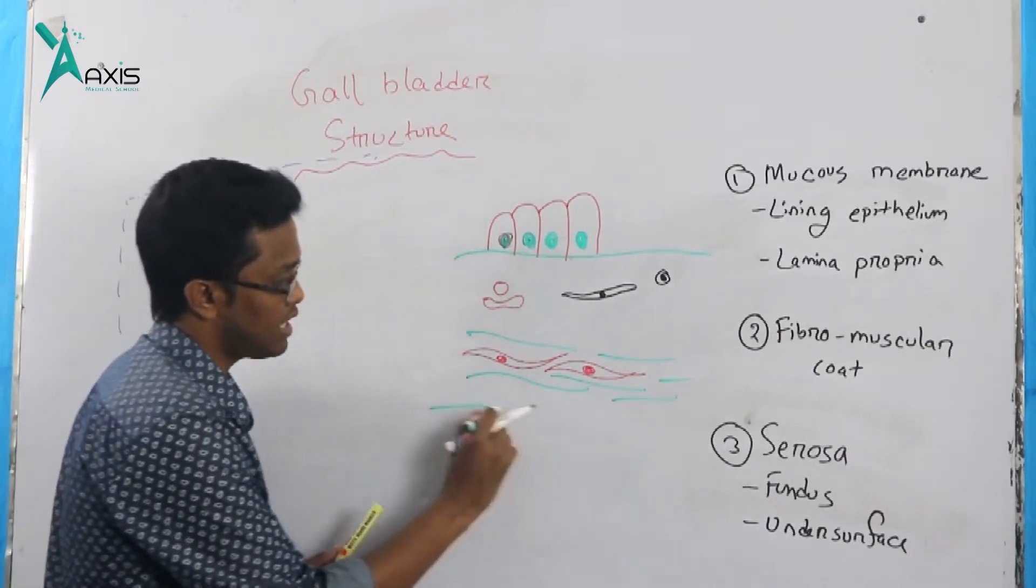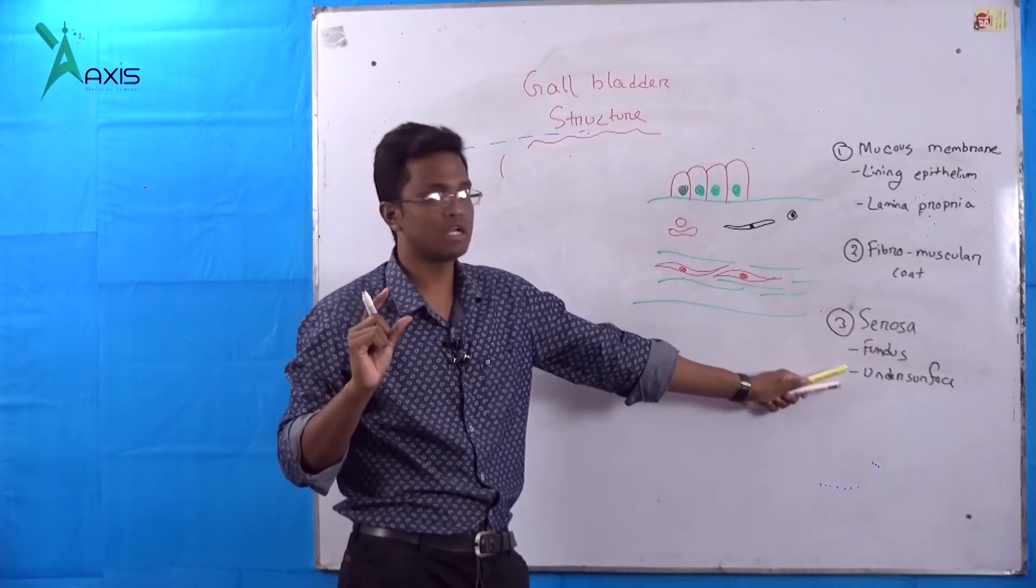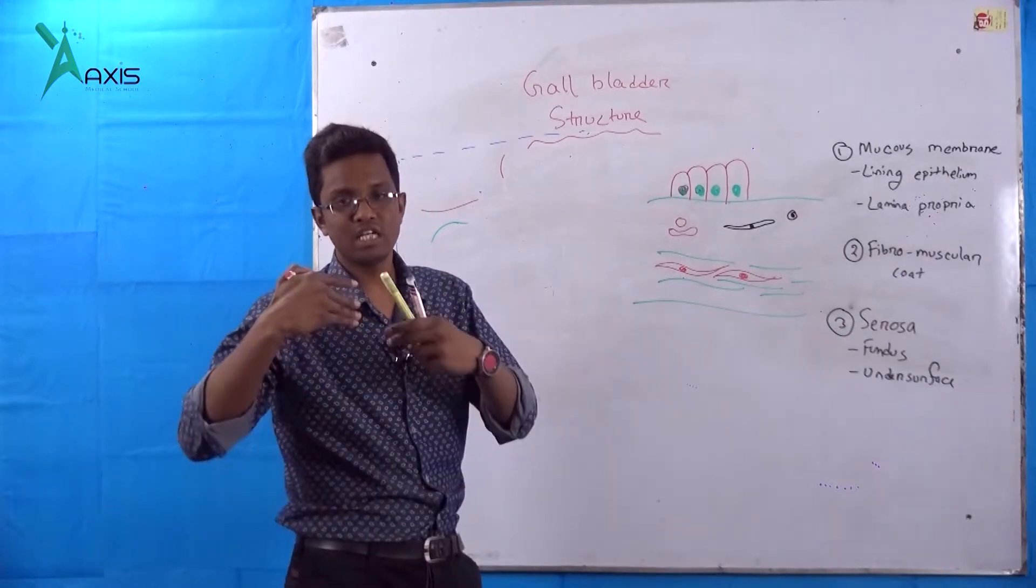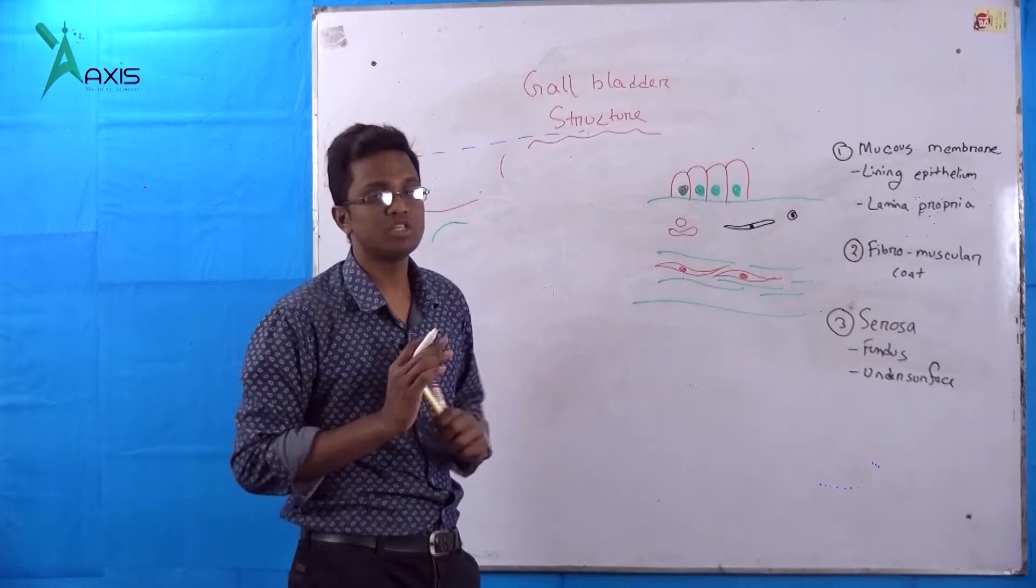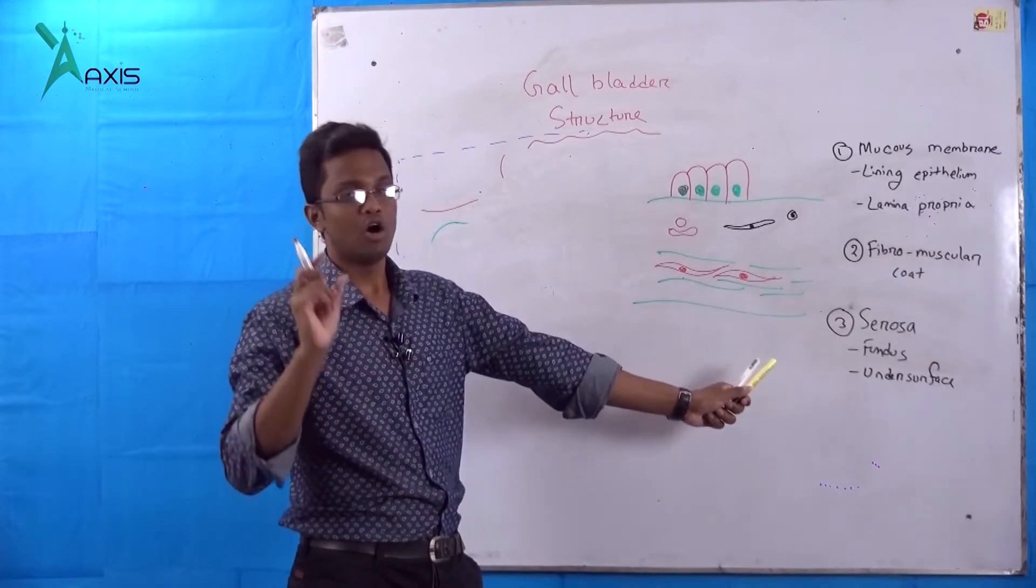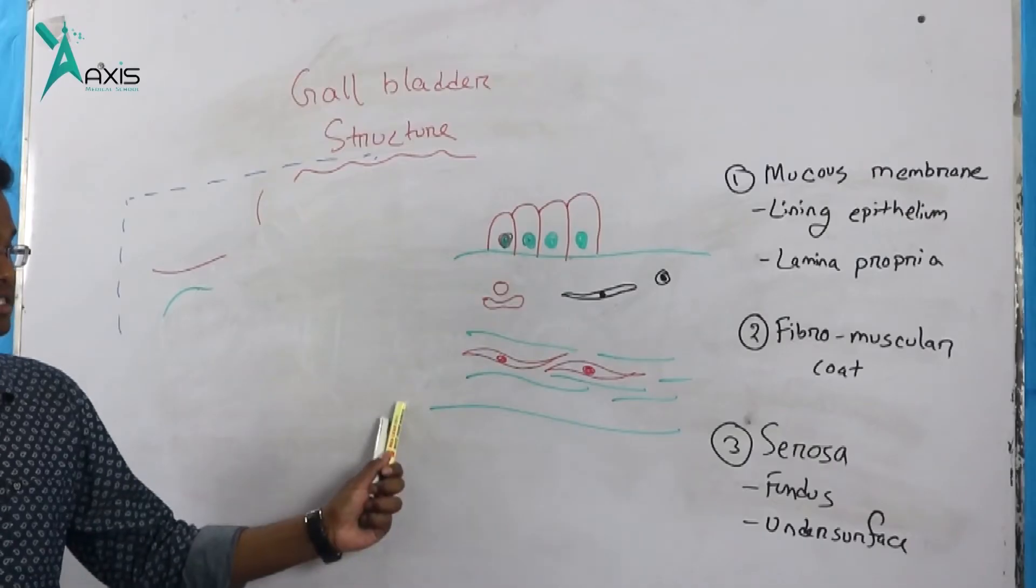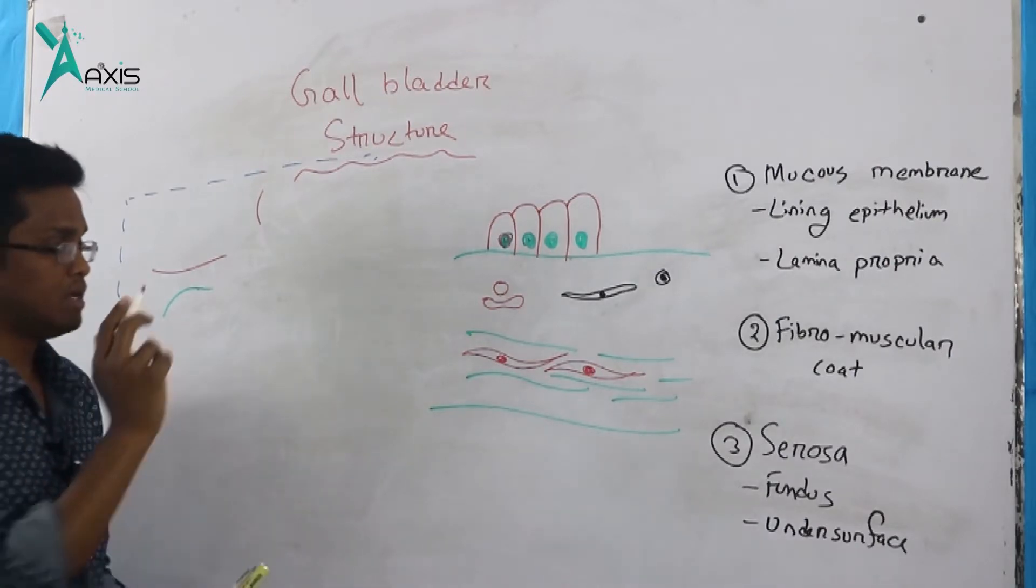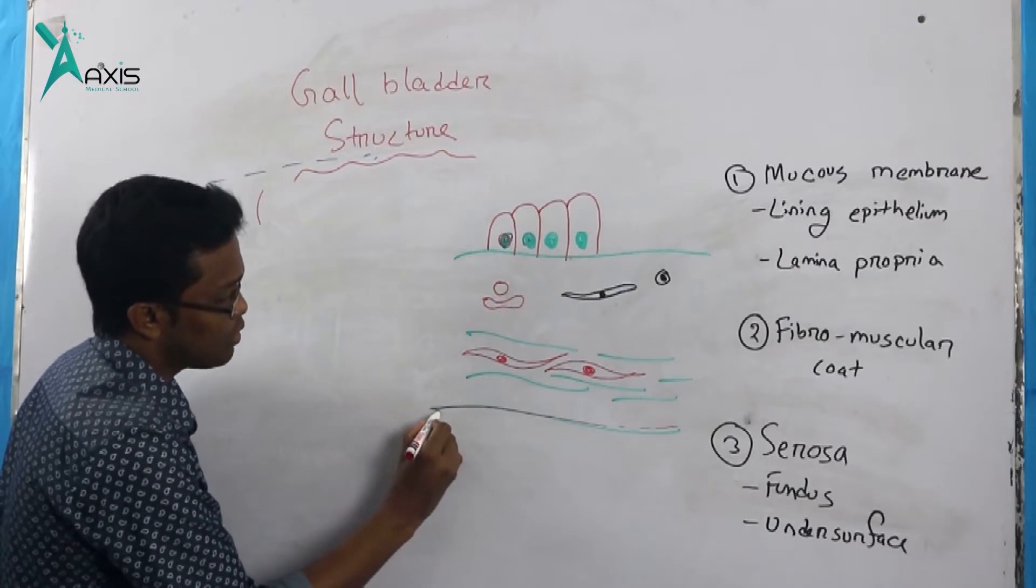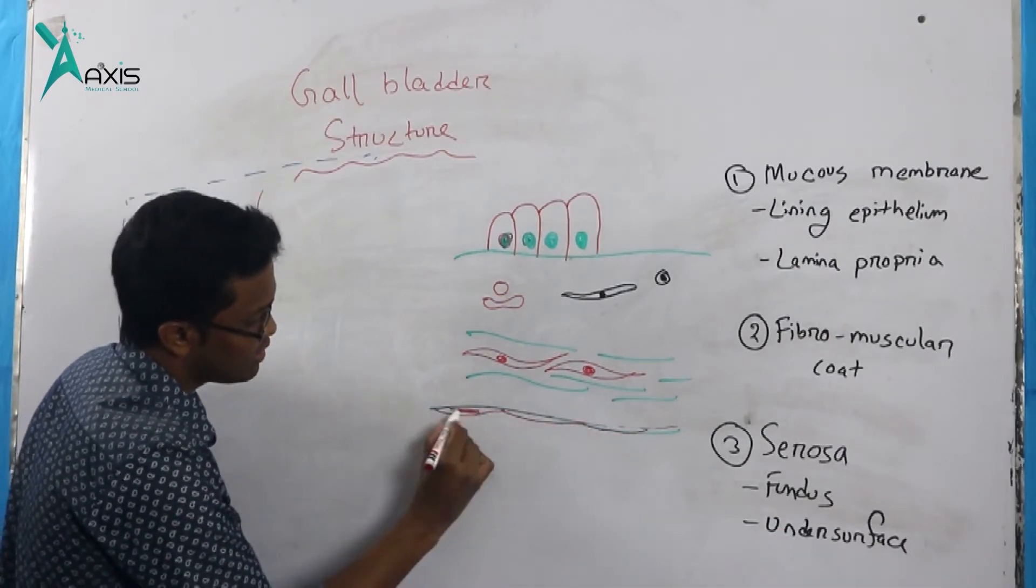The outermost layer is called serosa. The serosa maximally covers the fundus and is on the undersurface. Serosa means simple squamous epithelium, with a basement membrane below and flat cells above, flat cells with flat nucleus.